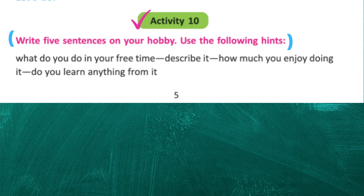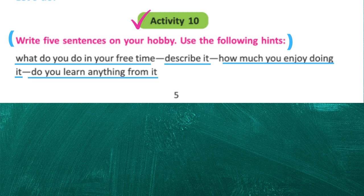Next, activity 10: write five sentences on your hobby using the following hints — what do you do in your free time, describe it, what do you enjoy doing, how much you enjoy it, and do you learn anything from it. My hobby is painting.